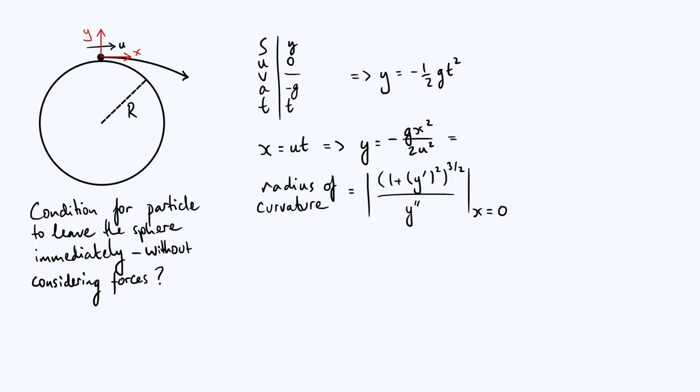So we better go back and differentiate y twice. That's fairly easy to do because y is just a polynomial. So differentiate once, y dash is going to be minus gx over u squared. The two on the bottom disappears, and you differentiate again, and it becomes a constant, y double dash is just minus g over u squared.